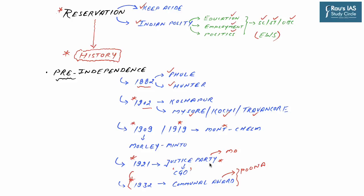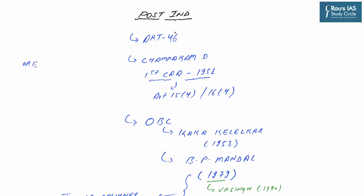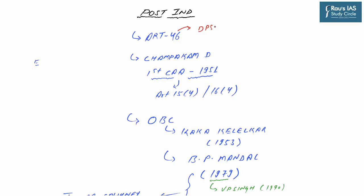In post-independence India, Article 46 of the DPSP talks about the promotion of educational and economic interests of Scheduled Castes, Scheduled Tribes and other weaker sections. It directs the state to promote with special care the educational and economic interests of weaker sections, in particular SC and ST, and to protect them from social injustice and all forms of exploitation. This became the basis of various reservation policies by the Government of India.